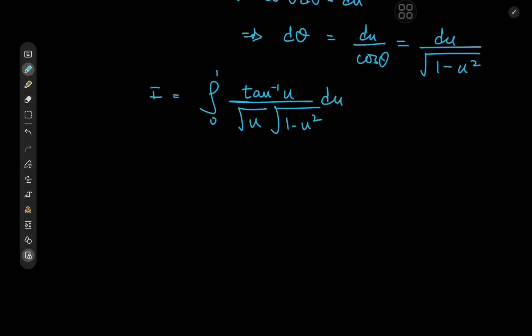The motivation for that is that we're integrating from 0 to 1. We have factors like u and 1 minus u squared, meaning that we have 1 plus u and 1 minus u. And whenever you have structures like these, the Weierstrass substitution can be quite useful — it's often quite helpful here.